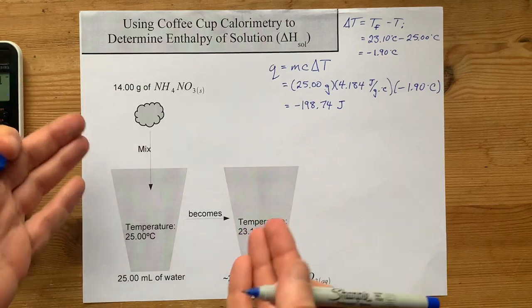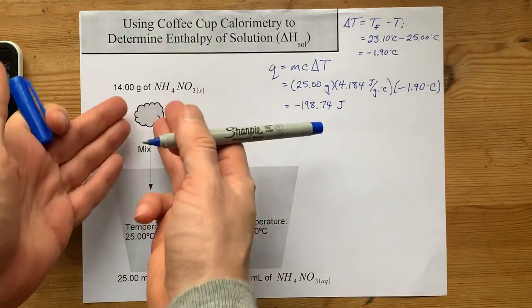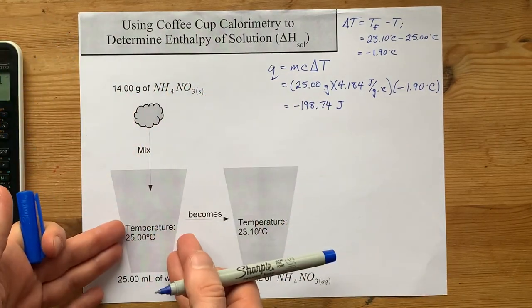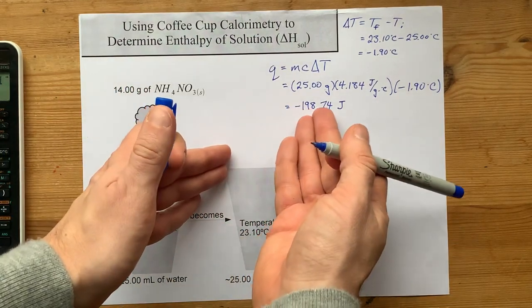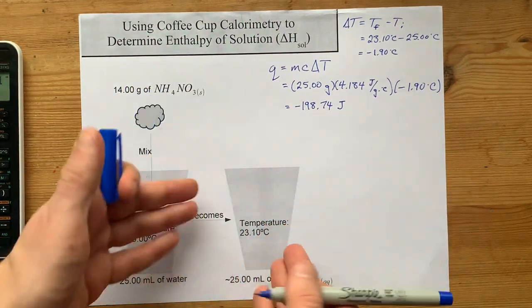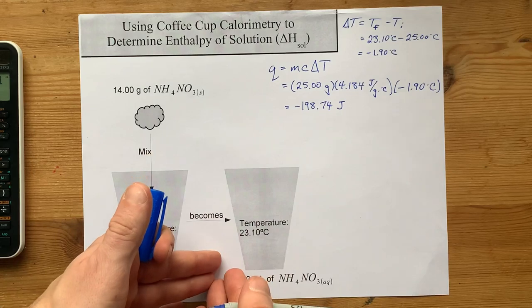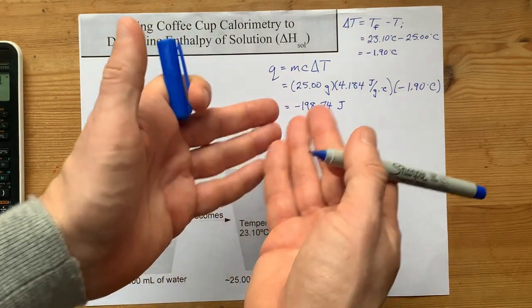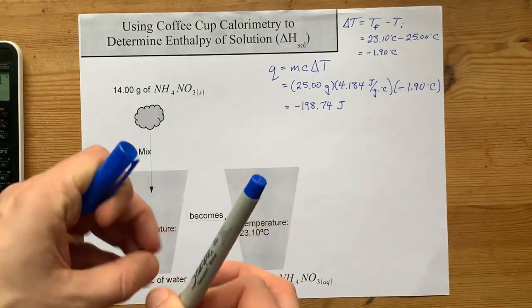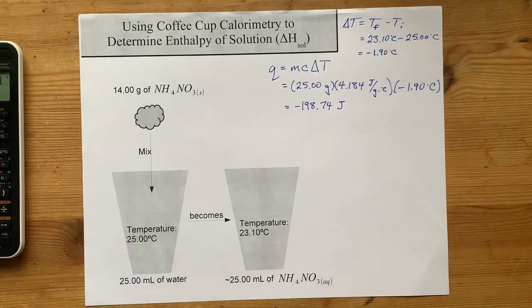So what that means is that dissolving this many grams of that solid required 198.74 joules of energy to leave the water. That's because that amount of energy was required or absorbed by the solid in order to help break its bonds.